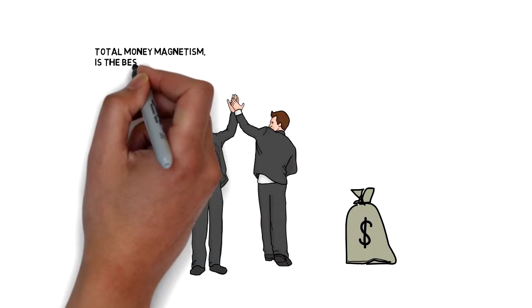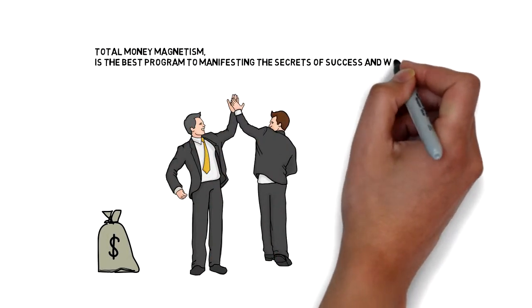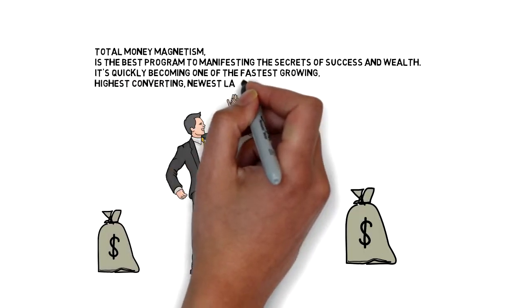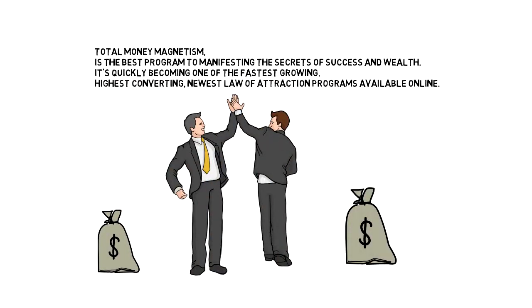Total Money Magnetism is the best program to manifesting the secrets of success and wealth. It's quickly becoming one of the fastest-growing, highest-converting, newest laws of attraction programs available online.